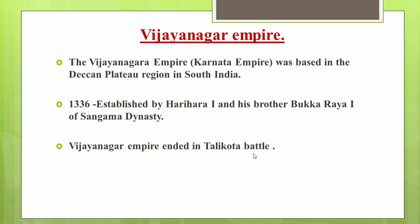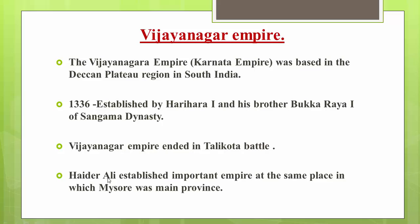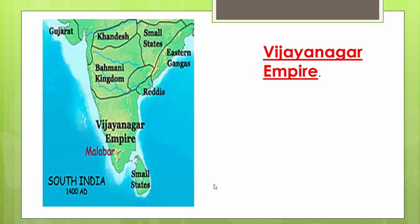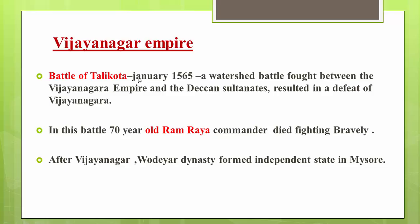The Battle of Talikota took place in January 1565. The Vijayanagara Empire, established in 1336, ended in 1565. This battle was fought between the Vijayanagara Empire and the Deccan Sultanates, resulting in the defeat of Vijayanagara. The 70-year-old Rama Raya, commander from the Vijayanagara side, died in this battle, and the empire lost its power.